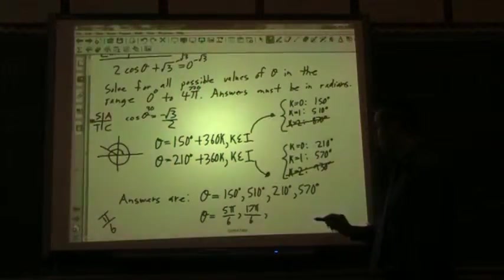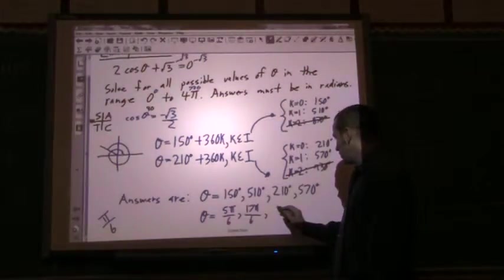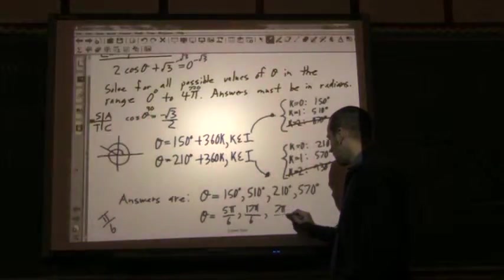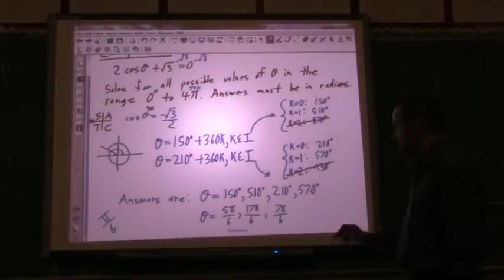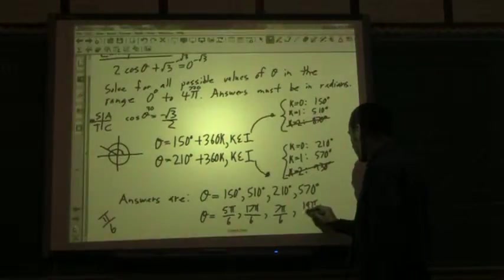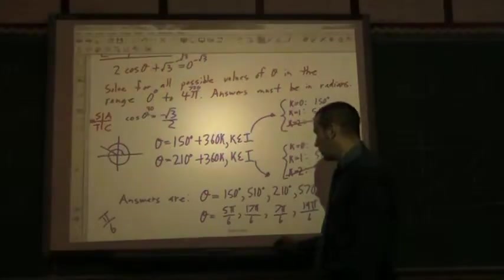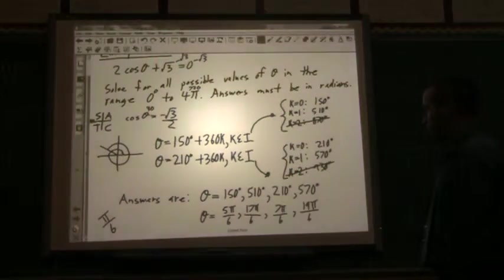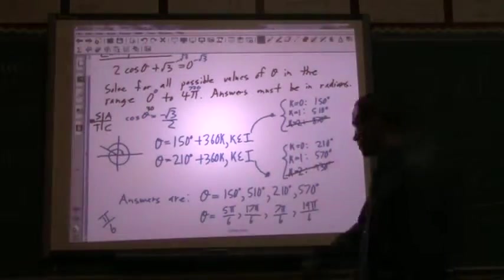Next up is 210. We'll have 7 30s. So I end up with 7π over 6. And then finally, 19π over 6 for 570, so there's your final answer. So those are all your final solutions.